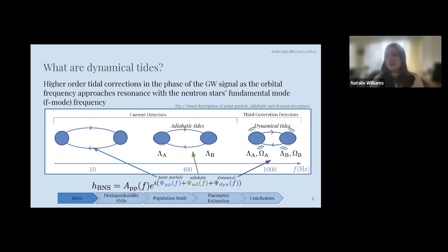At low frequencies, we model the induced quadrupole moment and the tidal field as a linear relationship with the dimensionless tidal deformability, lambda in this case, as the constant of proportionality. As you can see in this graphic, these are called adiabatic tides at this low frequency, and the dimensionless tidal deformability is a physical deformation of the star.